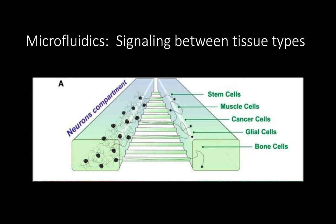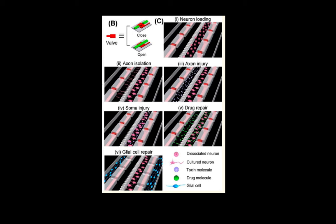These cell types include cancer cells, glial cells, and bone cells. The point here is that there are many possibilities to better understand neurobiology and neural signaling with this type of approach using microfluidics. Microfluidics are not limited to very simple study designs, though that is one great benefit.